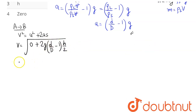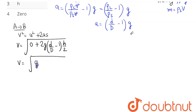The 2s cancel out, so velocity at the surface V = √(g × h × (d/D − 1)).